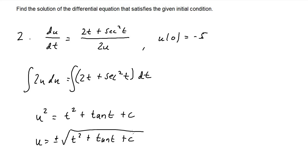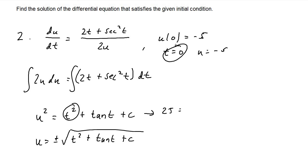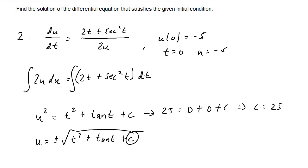Now we find the value of c using u(0) = negative 5, meaning when t equals 0, u equals negative 5. Substituting into u² = t² + tan(t) + c: negative 5 squared is 25, t² is zero squared which is 0, tangent of zero is 0, so 25 equals 0 + 0 + c, giving c equals 25. Substituting back, u equals plus or minus the square root of t² + tan(t) + 25.